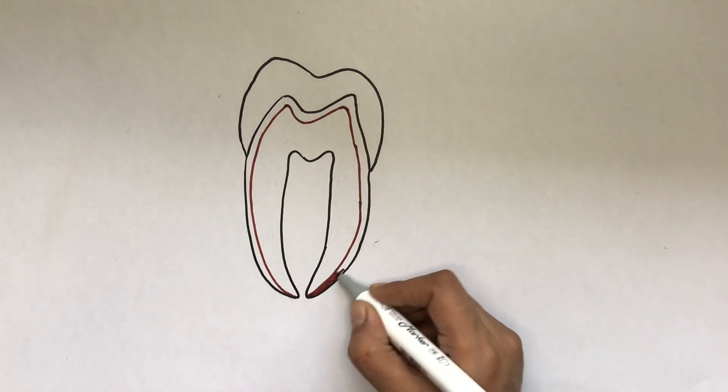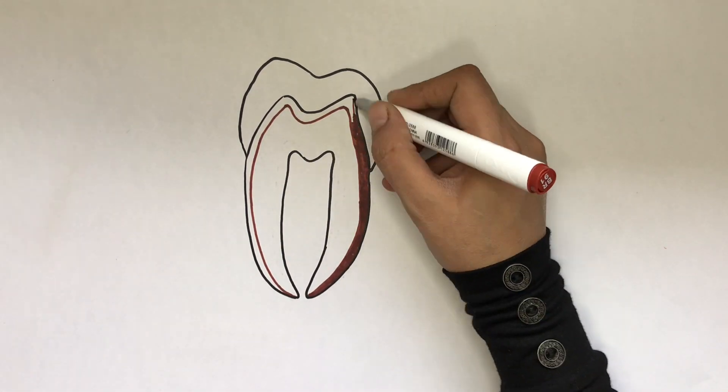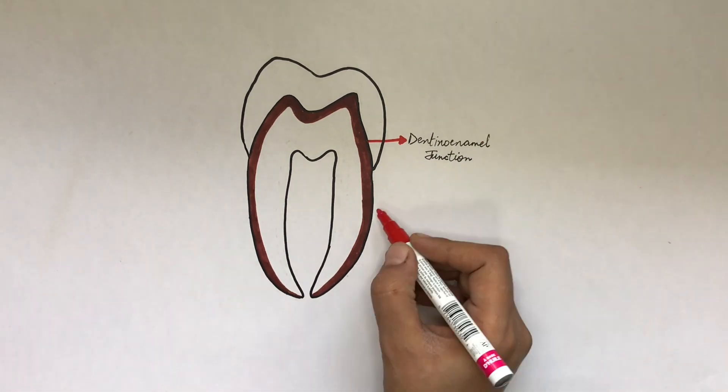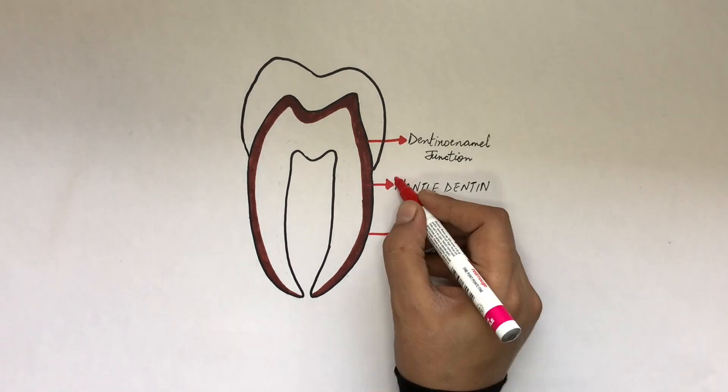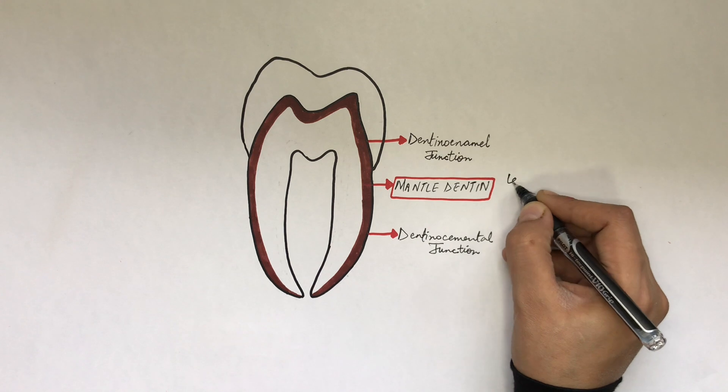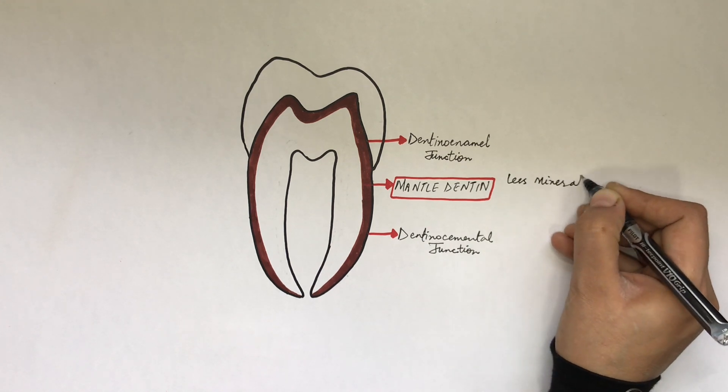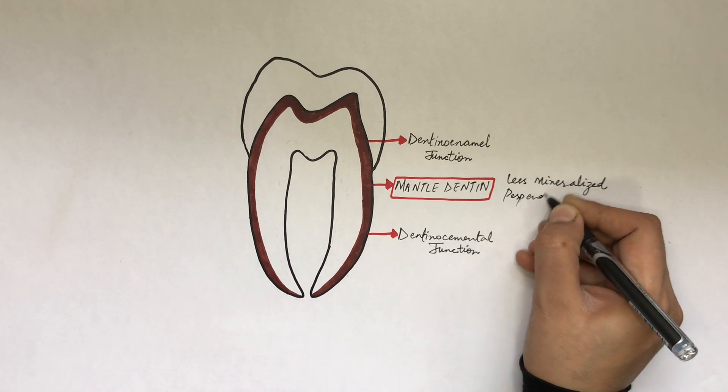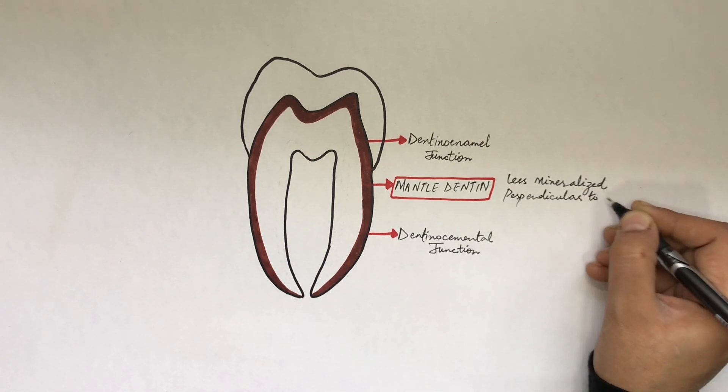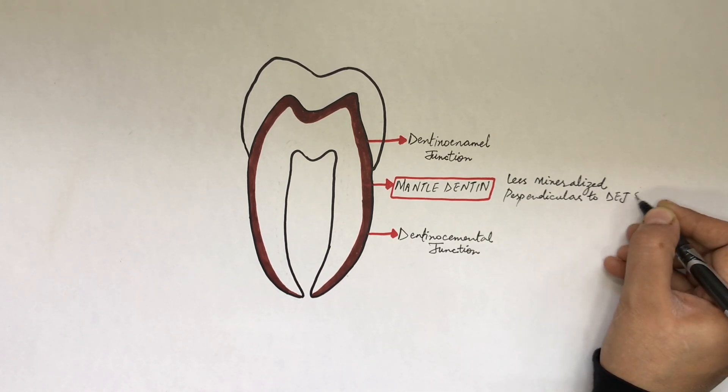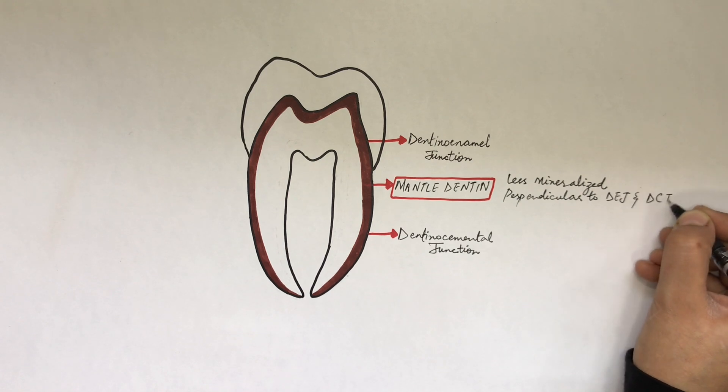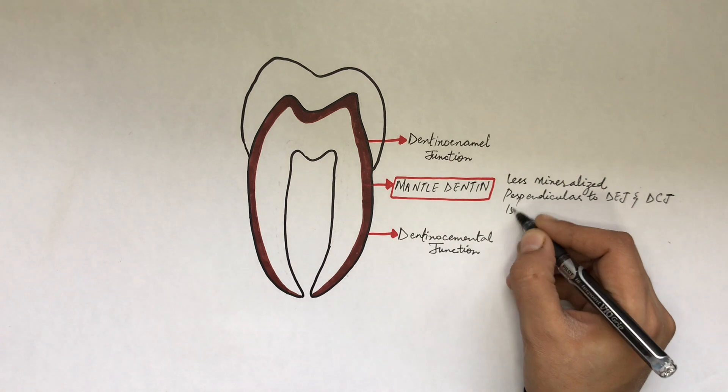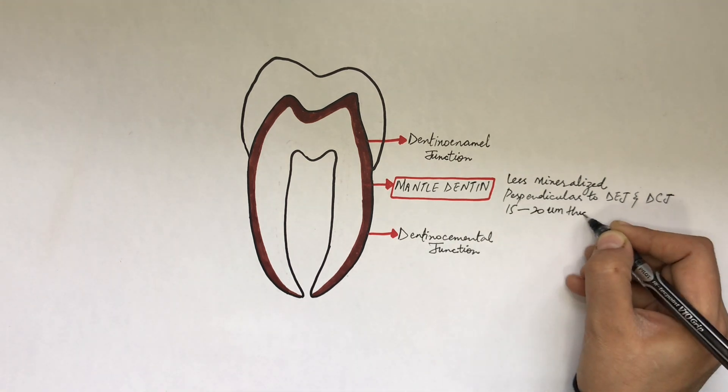The mantle dentine is the first formed in the outermost layer of the dentine, lying close to the dentino-enamel junction at the crown level and the dentino-cemental junction at the root level. This mantle dentine is relatively less mineralized compared to other parts of dentine, and its fibers are perpendicular to the dentino-enamel junction at the crown while parallel to the dentino-cemental junction in the root. Its thickness varies from 15 to 20 micrometers.